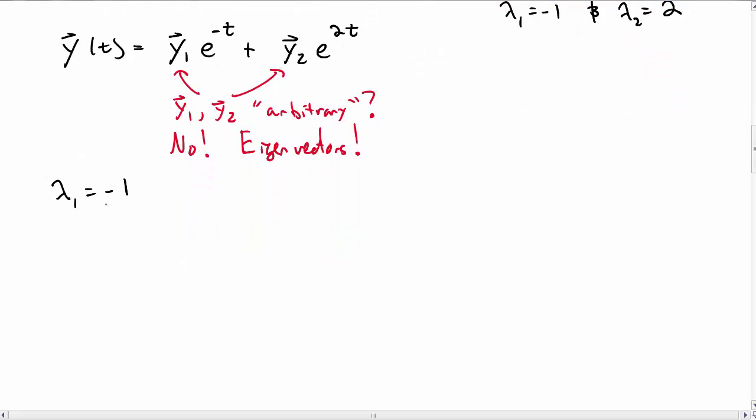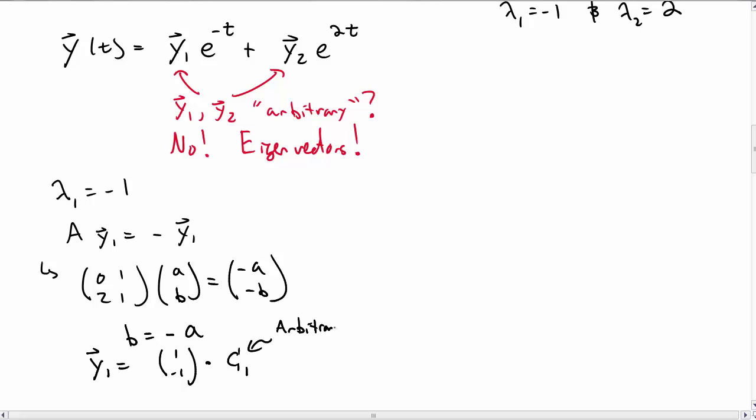So now that we have our eigenvalues, let's find our eigenvector. Lambda 1 equals minus 1. We can find our eigenvector by rewriting our eigenvalue equation. And we find that in order to solve the eigenvalue equation, b must equal minus a. Or rather, y1 could be something like 1, minus 1. Now it could also be times some arbitrary constant. And here we're actually going to write in that arbitrary constant that could be in there for our eigenvector.